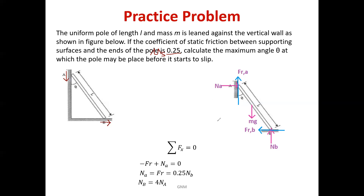Now use the three equations of equilibrium one by one to find unknowns. Summation FX equals zero gives us NA minus FRB equals zero, so NA equals FRB. As friction force for surface B is mu times NB, with mu equal to 0.25, we write NA equals 0.25 NB. Rearranging the terms, NB equals 4 times NA.